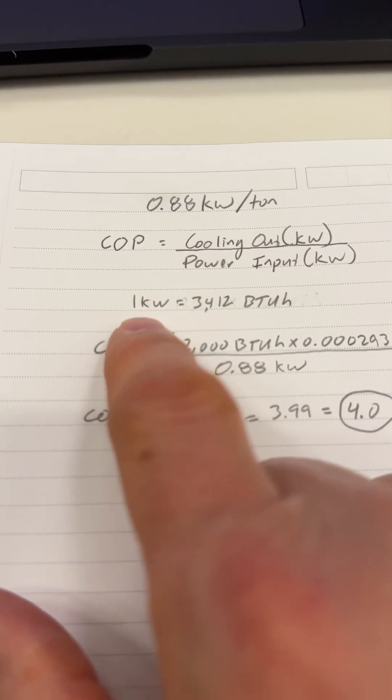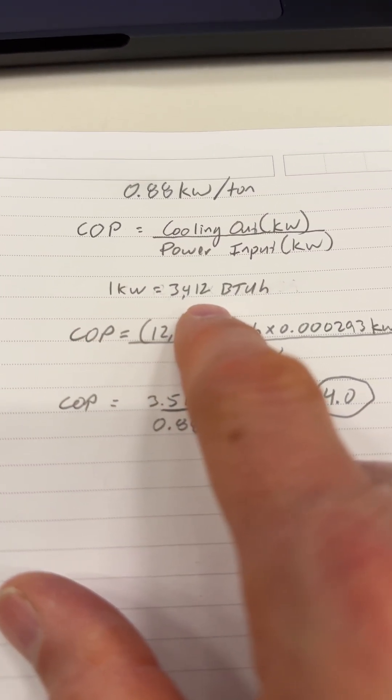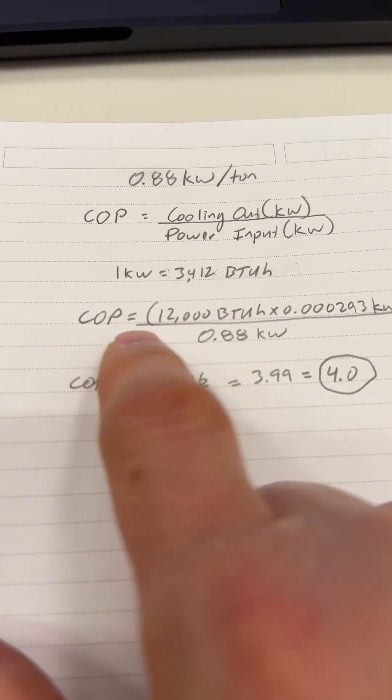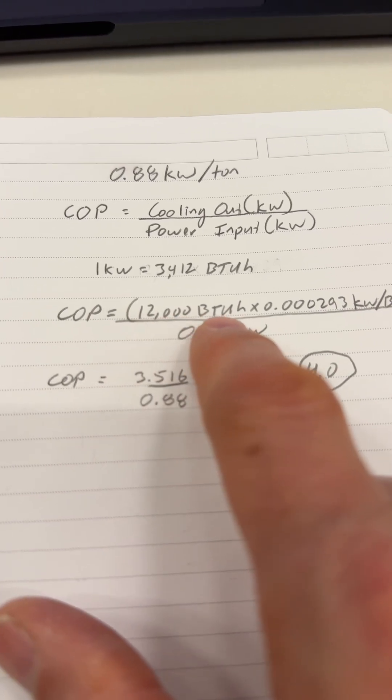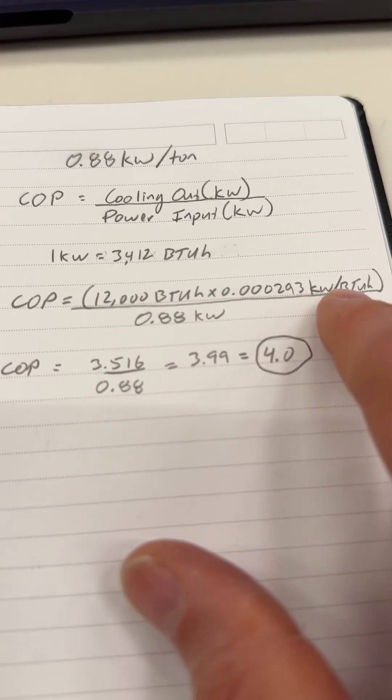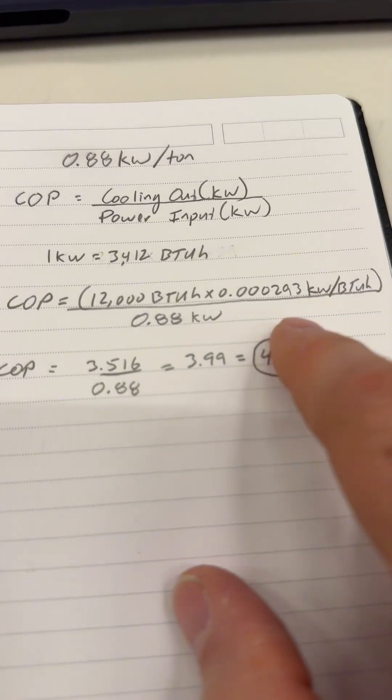So we know that 1 kilowatt was 3,412 BTUs per hour, so the COP equals 12,000 BTUs, which is a ton, and then we use the conversion factor to convert that to kilowatts.